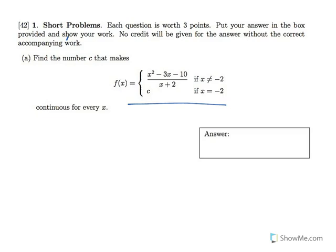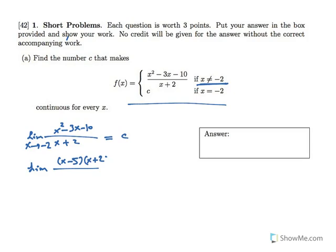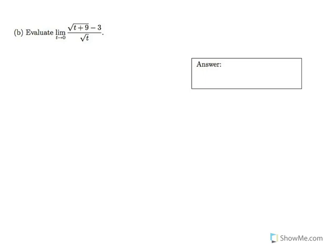The first question asks: for what values of C is this function always continuous? The function is always continuous when the limit of the function and the value of the function at all points are the same. The only point we are worried about is x equals negative 2. C, which is the value at x equals negative 2, must equal the limit. If I reduce the fraction, I have x minus 5 as a reduced function. Therefore, the limit of x minus 5 as x approaches negative 2 gives C equals negative 7.